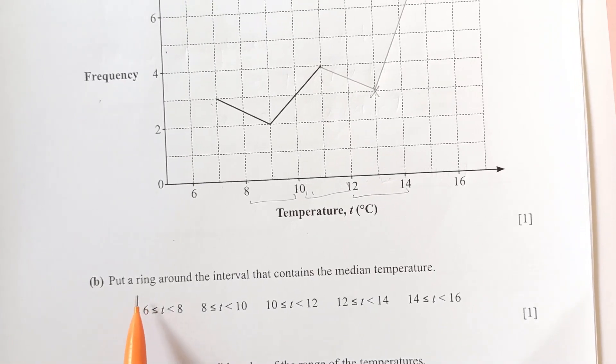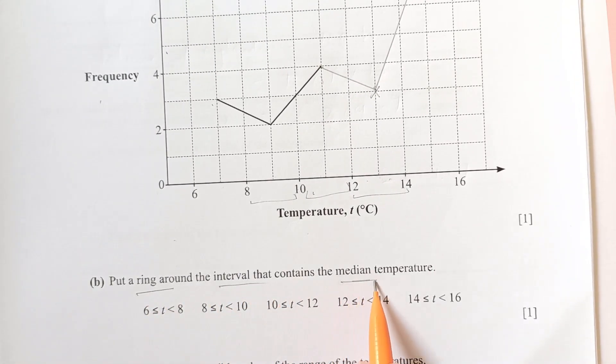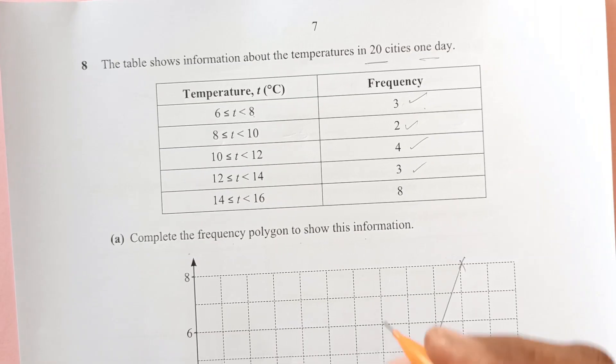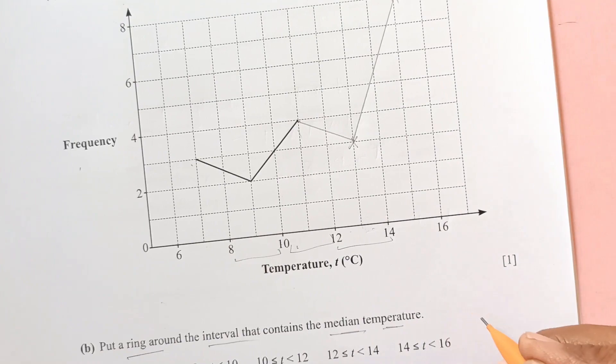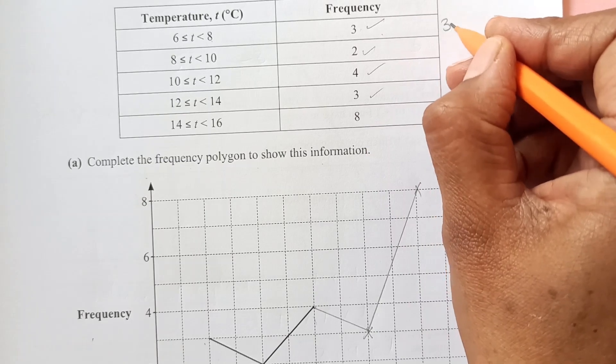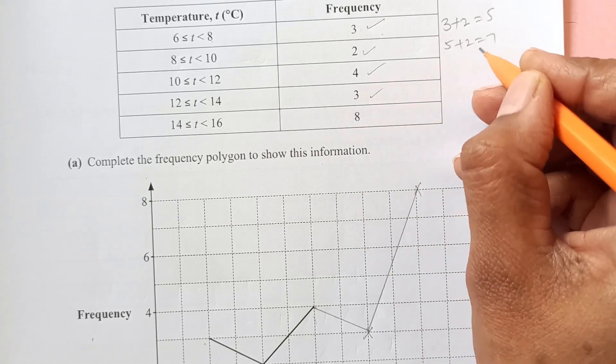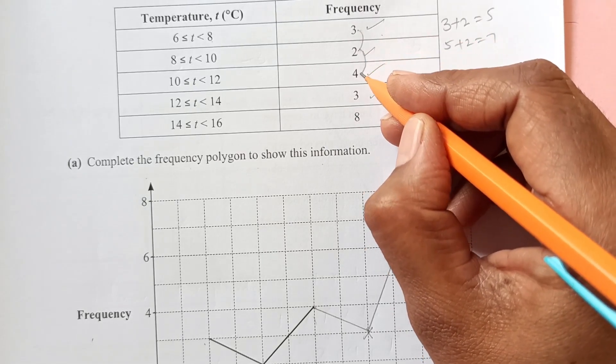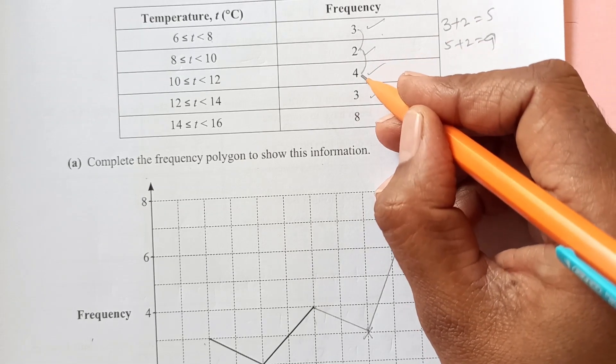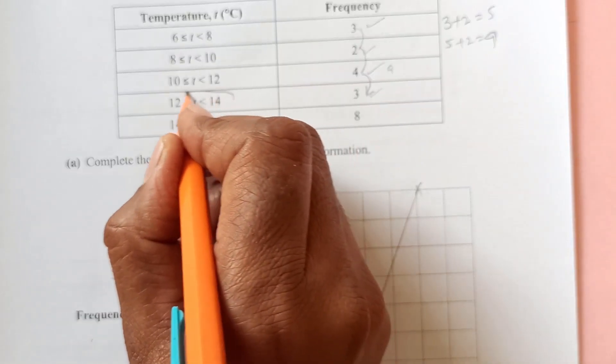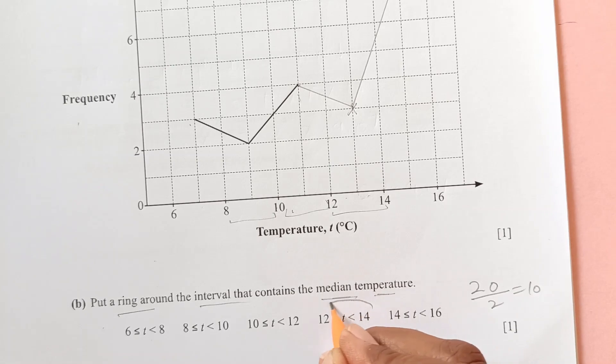Now, part B. Put a ring around the interval that contains the median temperature. Median temperature. What is median? Median will be the middle value somewhere. For the median, we will take, we have here 20 cities. Half of that is 10. So, 10 we have here. 3 plus 2 is 5. Then, next one is 5 plus 2. It is 7. Then, this is 5 plus 4 is 9. Then, it will be, 10 will be in the next one. So, up to here is 9. The next is going to be in the next interval. So, temperature for that is 12 to 14. So, we are going to circle this one.